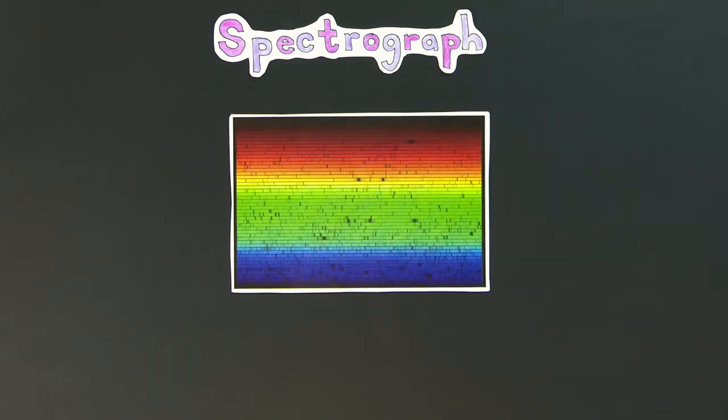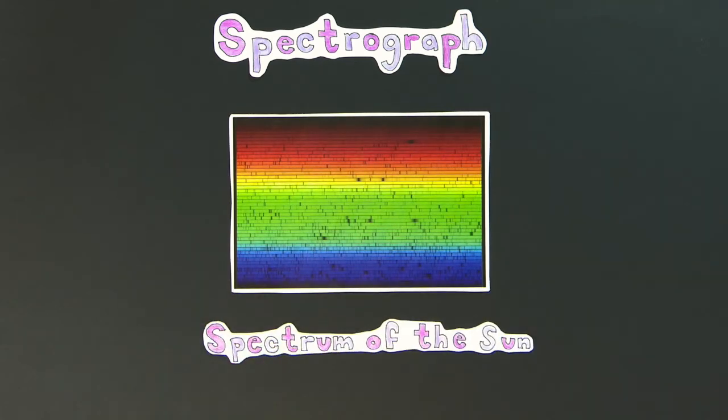Each element will always have the absorption occur in the same areas of the spectrum, so by looking at an object's spectrum, such as the sun, we can decipher what elements are present and by how much.